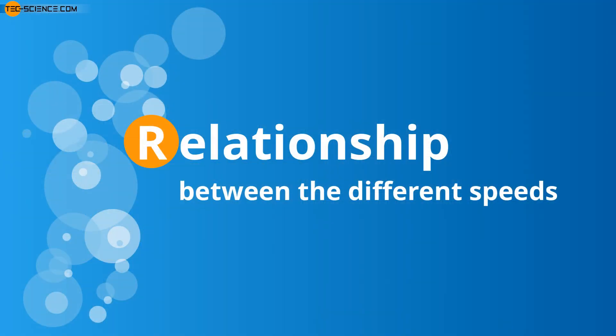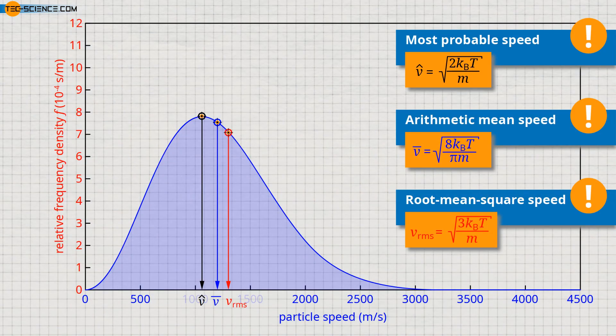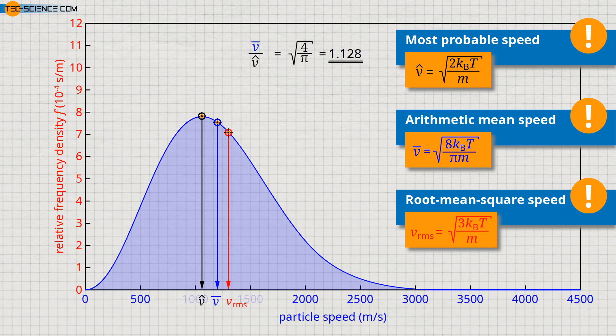Relationship between the different speeds. The figure summarizes the different characteristic speeds. Basically, the mean speed of the particles is always greater than the most probable speed, and the root mean square speed is always greater than the mean speed. The different speeds are always in a constant ratio to each other, independent of the temperature or the mass. The average speed is always higher by 12.8% than the most probable speed, while the root mean square speed is always 8.5% higher than the average speed.